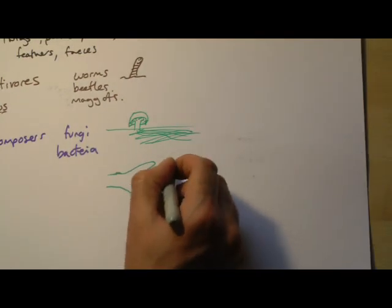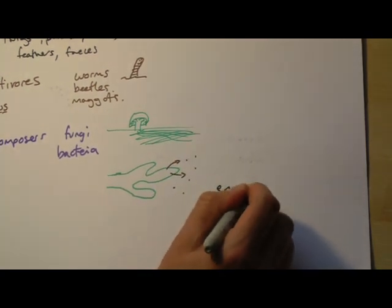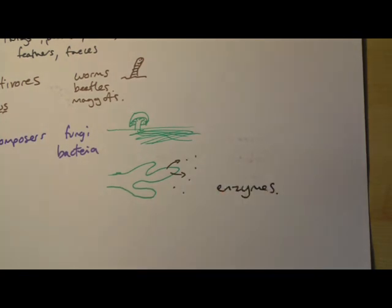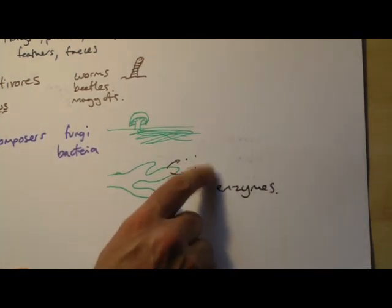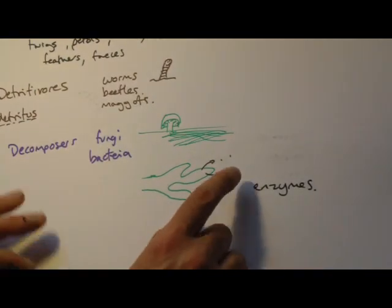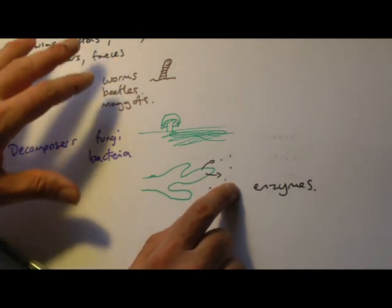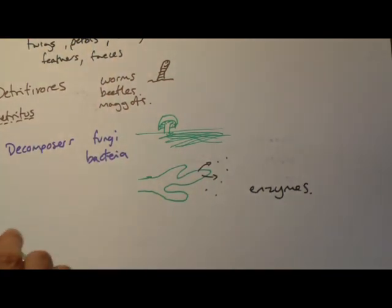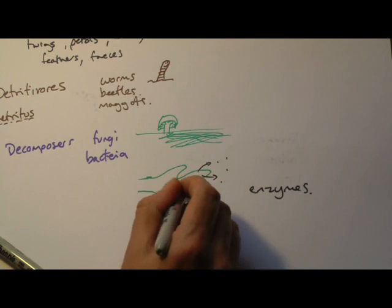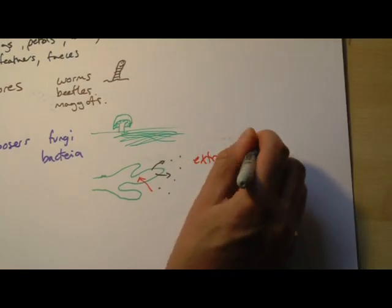And what they do is they release enzymes, and they'd release that onto your food, for example, onto bread. But in the environment they'd be releasing onto all these things that have fallen down. The enzymes digest the food, they break down the tiny bits of dead leaves and stuff, and then the fungi reabsorbs it. And this is called extracellular digestion.